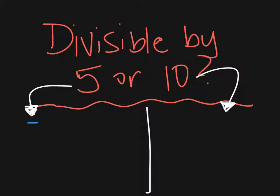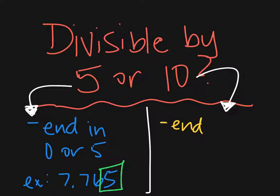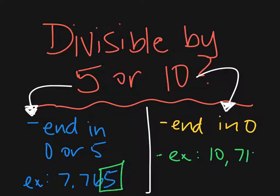For the rule for 5, the number has to end in a 0 or 5. For example, the number 7,765 would be divisible by 5 because it ends with a 5. The divisibility rule for 10 is actually a little simpler because the number has to end in a 0 — it can't end in any other number. For example, the number 10,710 would be divisible by 10 because it has a 0 in the ones place.